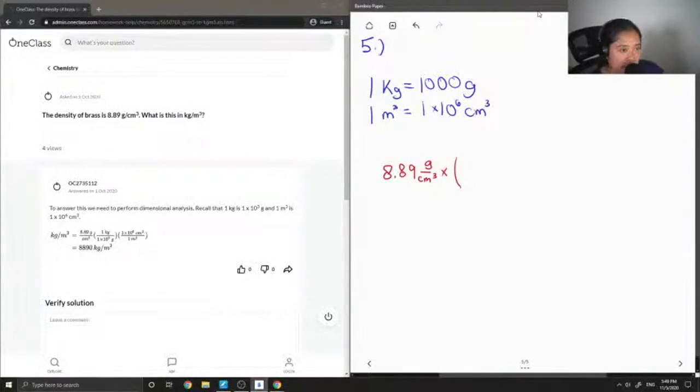So first I would put the units I'm looking for on top, which is kilograms, over 1,000 grams. And I'm just going to show how my grams should cancel out.